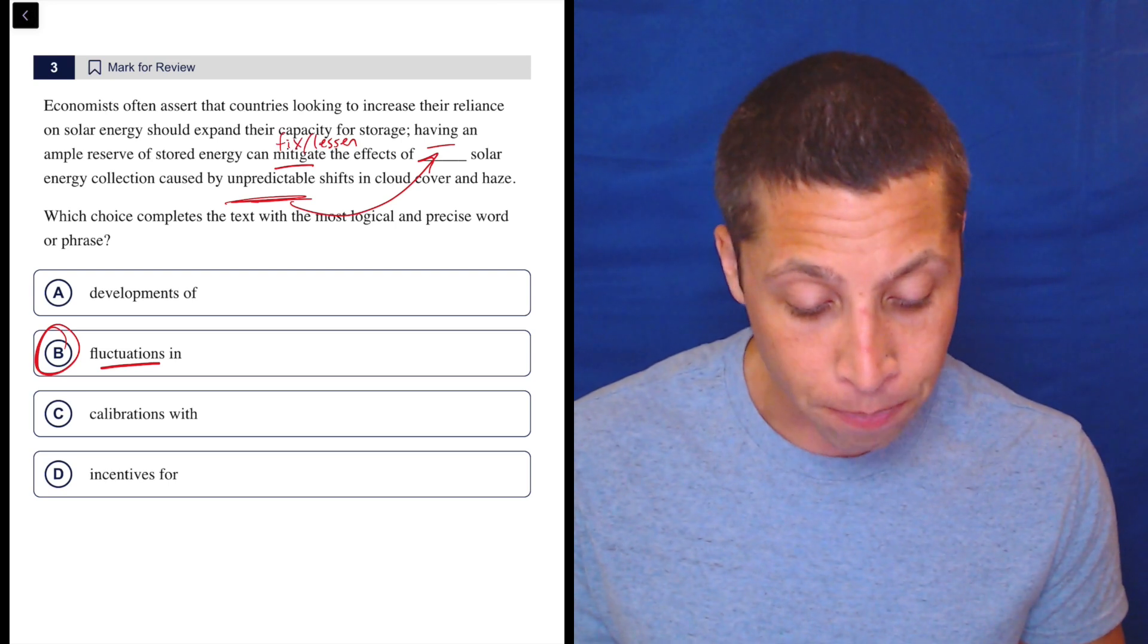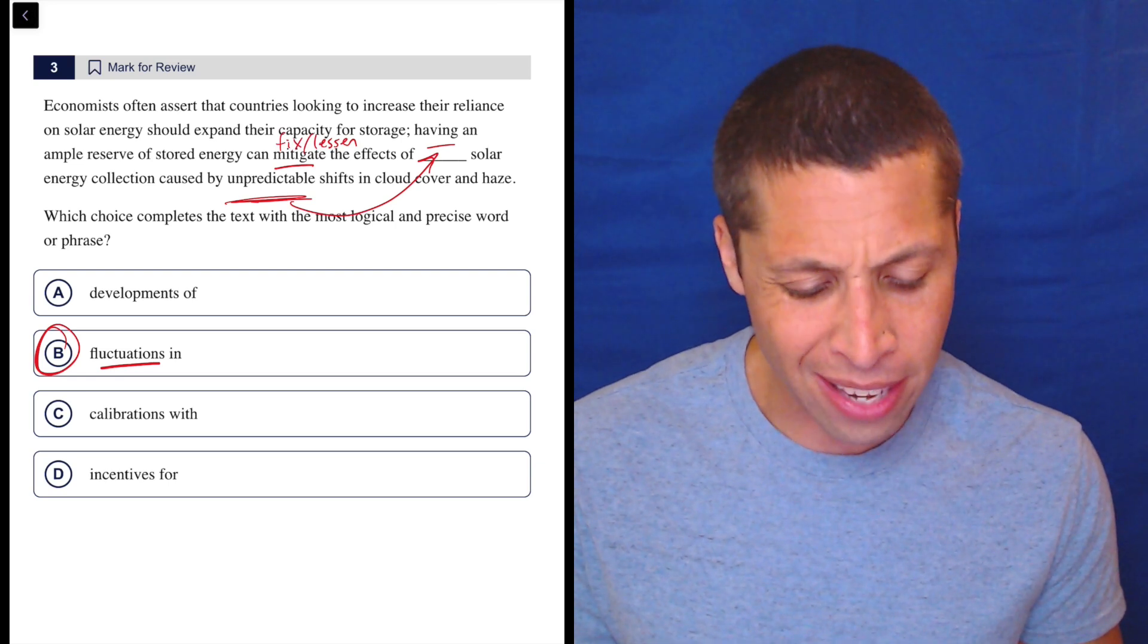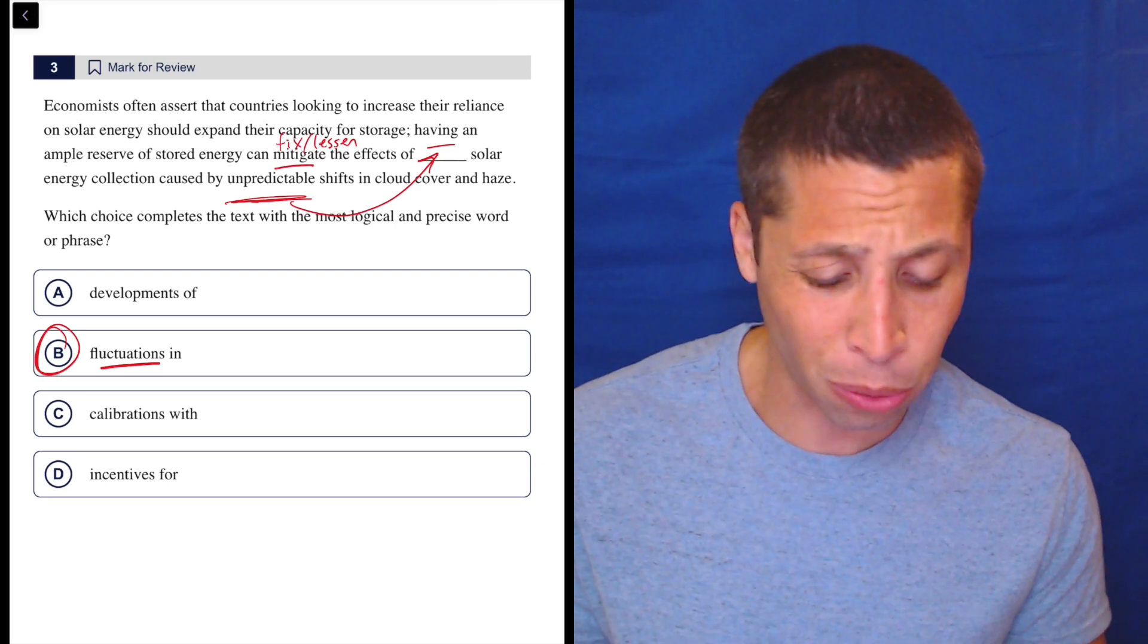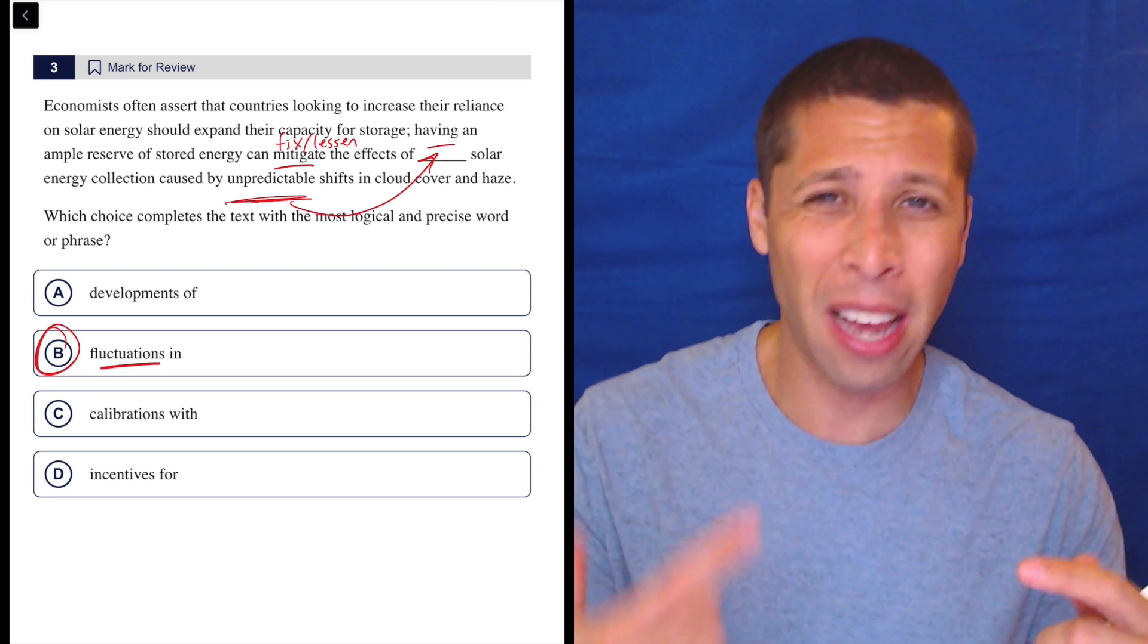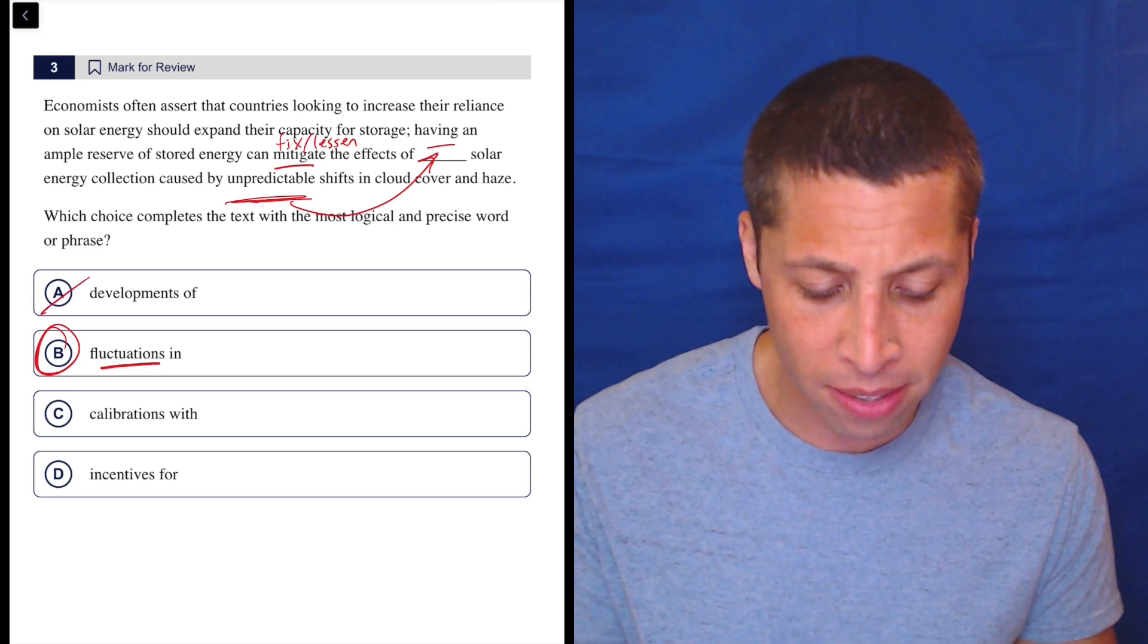Choice A: having an ample reserve of stored energy can mitigate the effects of developments of solar energy collection. That makes it sound like the problem is that we're innovating and making new things. I don't understand what that even means.